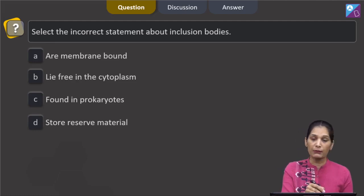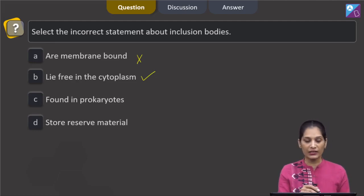If we see the options, they are membrane bound, no. They lie freely in the cytoplasm, yes. They are found in the prokaryotes, yes. They store the reserve food material, absolutely true.